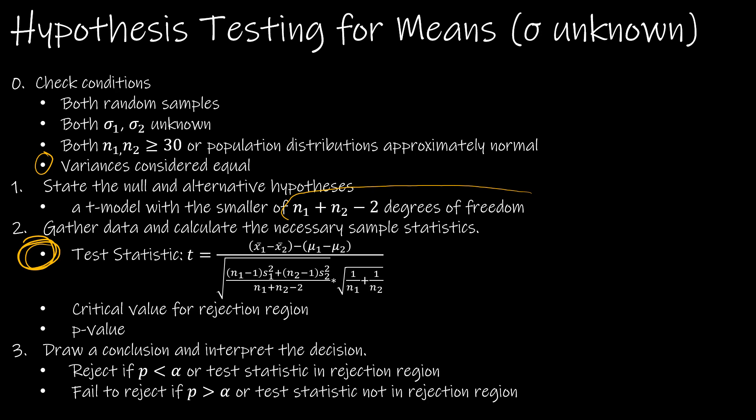The degrees of freedom is n1 plus n2 minus 2. But the test statistic is also different. The test statistic has everything to do with the fact that the variances are considered equal, and therefore we're going to pool the variances. So it's kind of a complicated little function here. But it's not going to stress us too much because as long as we set up Excel correctly the first time, then it will continue to give us the correct examples, and we won't have to worry about making mistakes with parentheses and squares and square root functions.